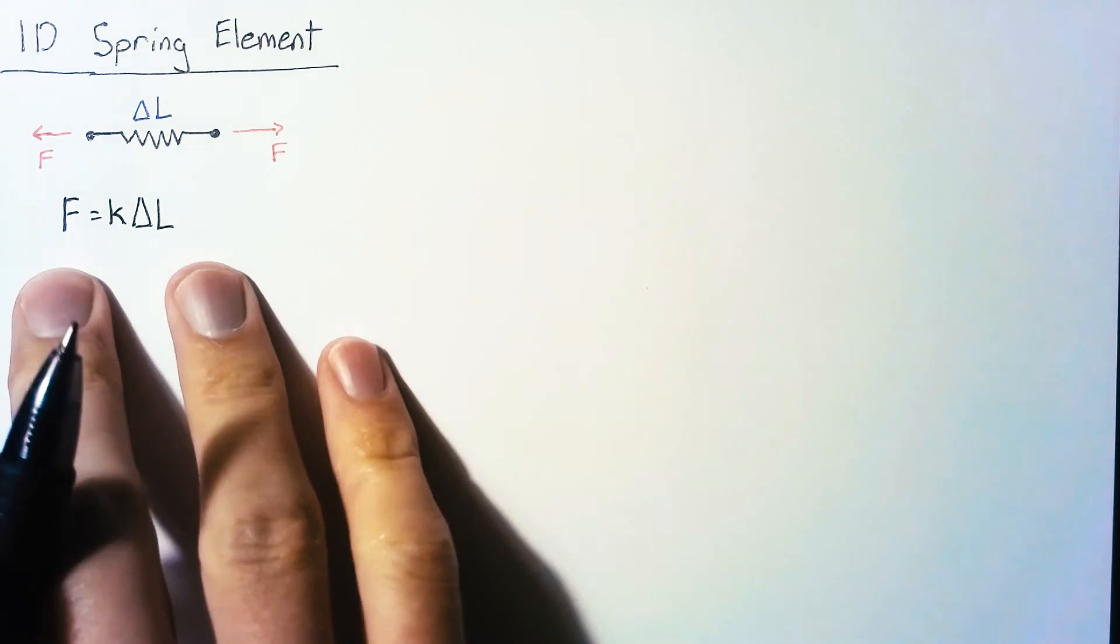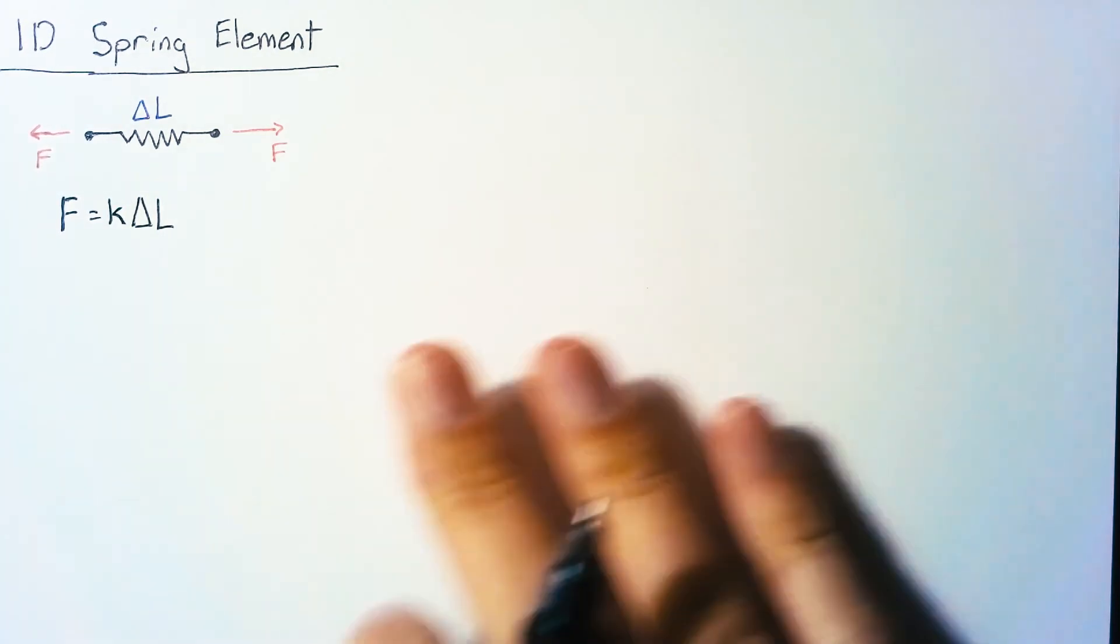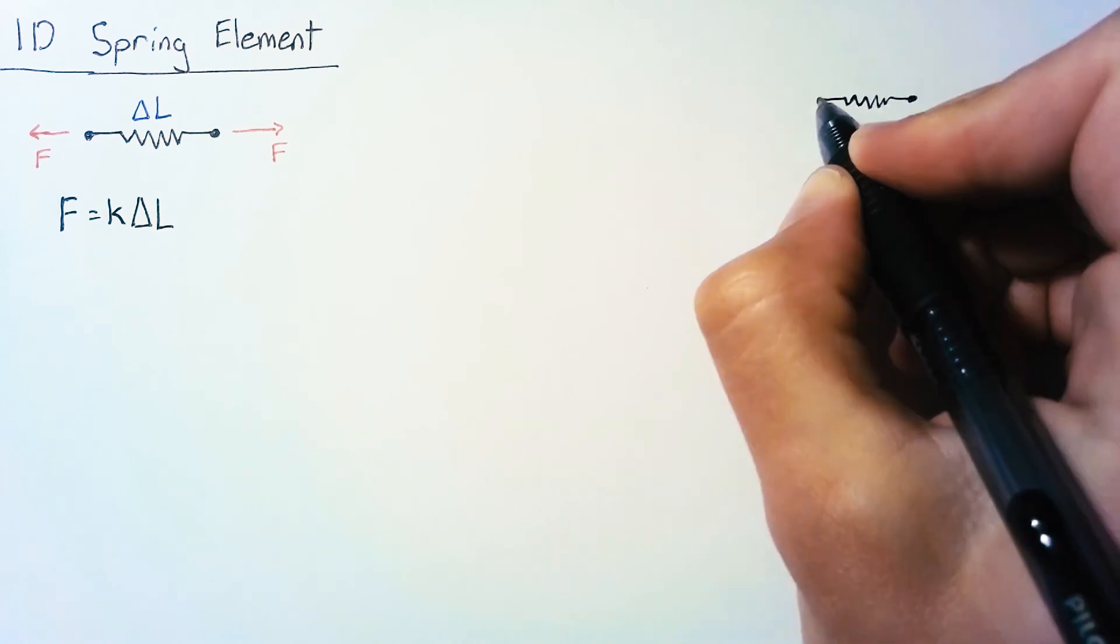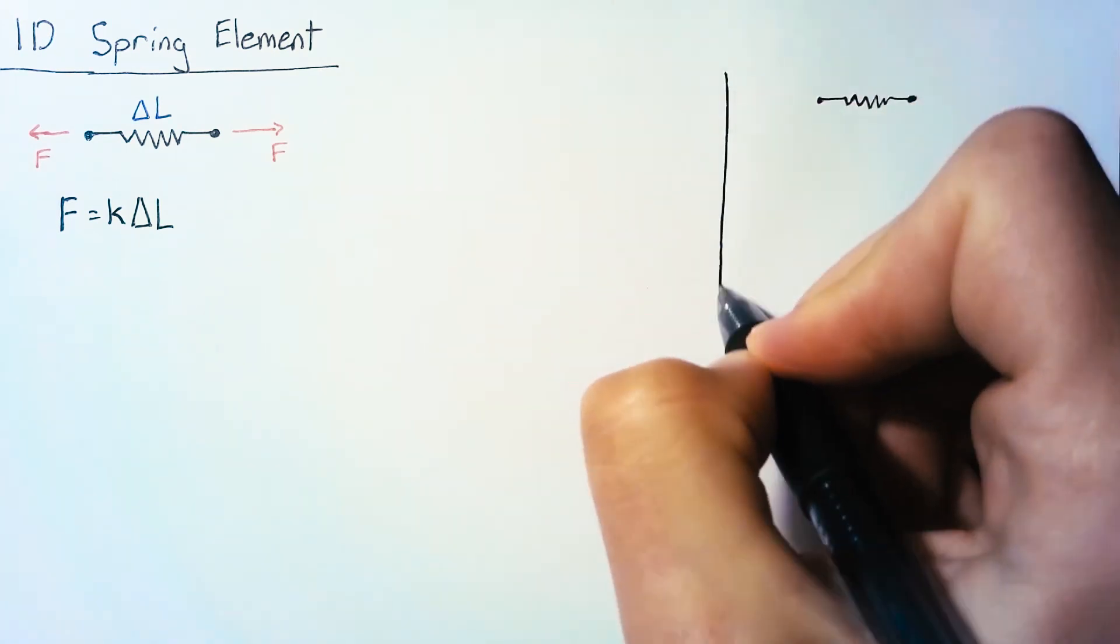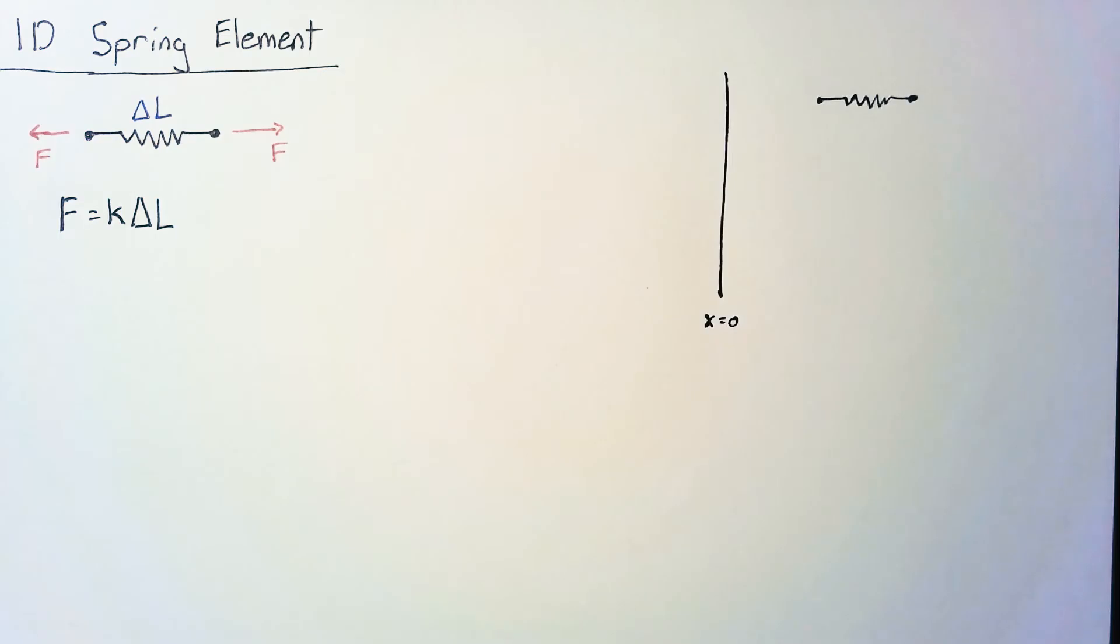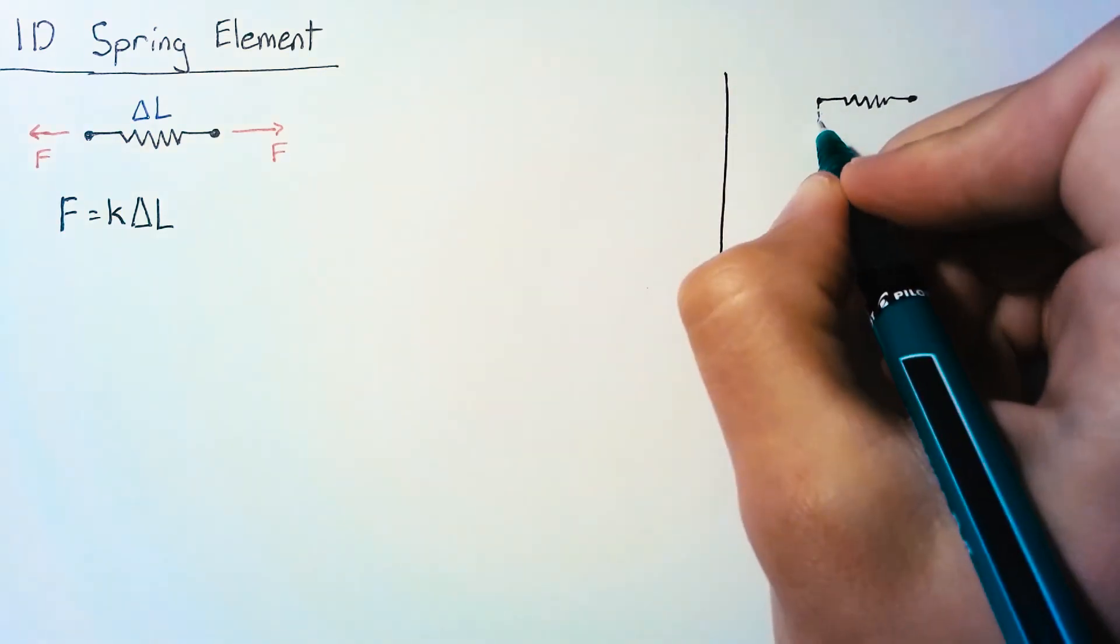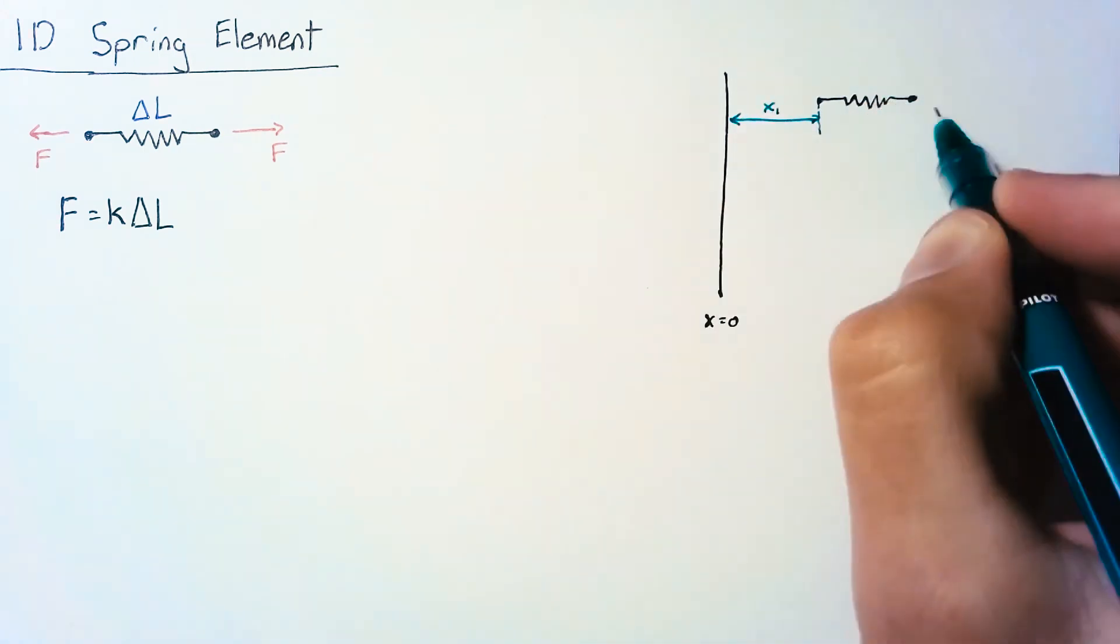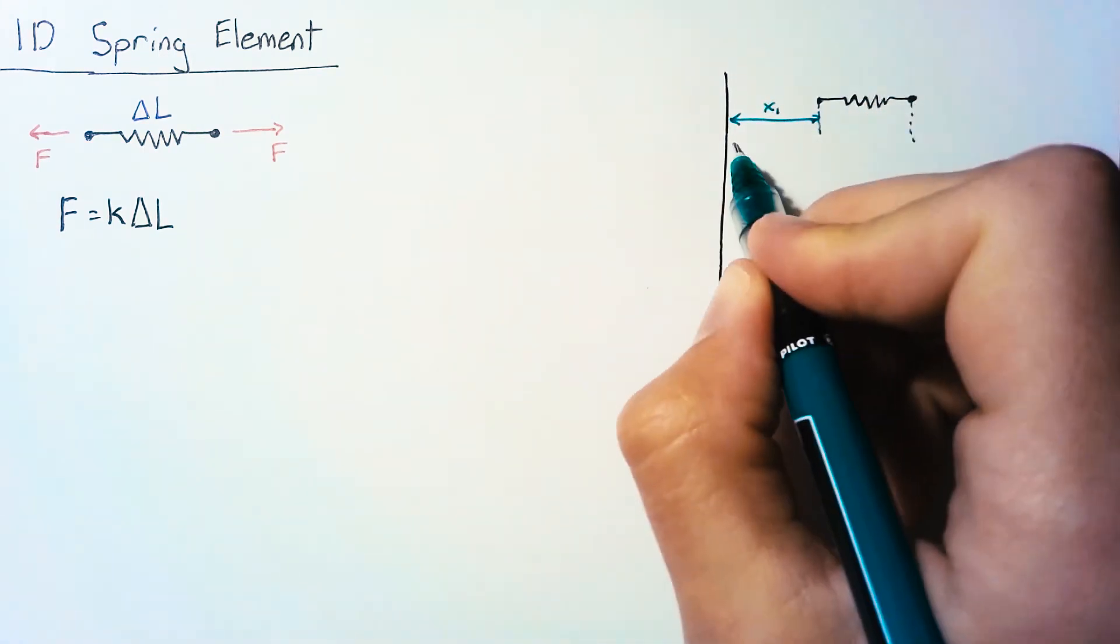Now what we want to do is take this concept and generalize it so we can apply it to any geometry. Let's look at our spring but now we're going to compare it to an x-axis and what this does for us is it allows us to define the position of these nodes, the two endpoints of our spring.